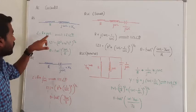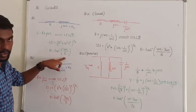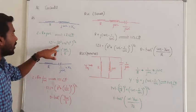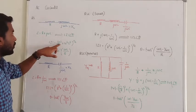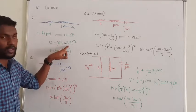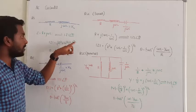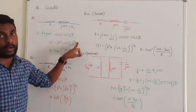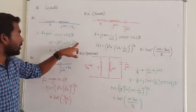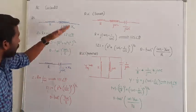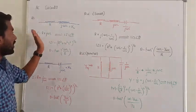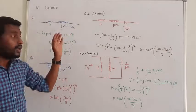The phase angle is the arctangent of the imaginary part divided by the real part. The magnitude is the square root of the real part squared plus the imaginary part squared. That is how we convert terms from rectangular to polar form.